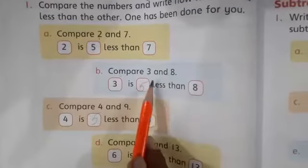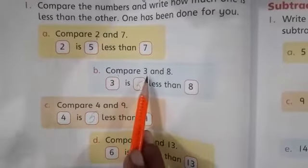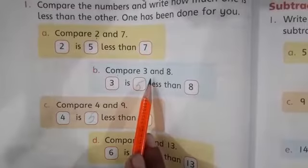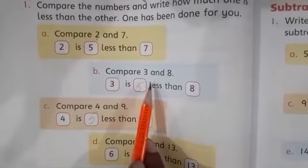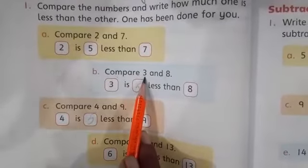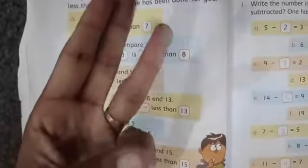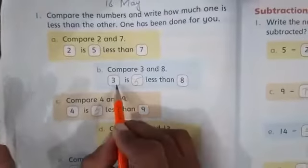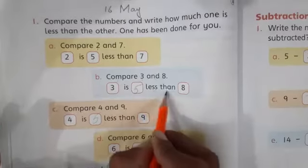Compare 3 and 8. Here compare 3 and 8. Count: 3, 4, 5, 6, 7, 8. How much? 1, 2, 3, 4, 5 fingers. Here what do we write? 5. 3 is 5 less than 8.